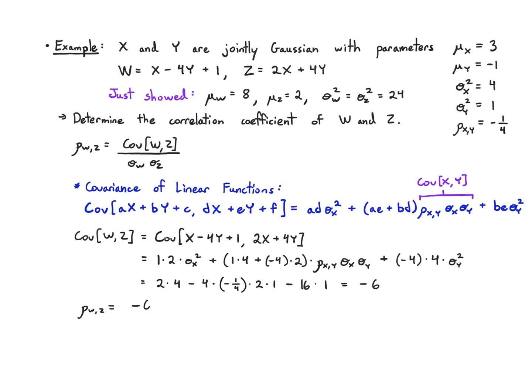So plugging that in, I get minus 6 over root 24 times root 24, and that's minus 6 over 24, which is minus 1/4. So in this case the correlation coefficient stayed the same, which is a coincidence — something I designed for this problem, but it could have ended up changing.